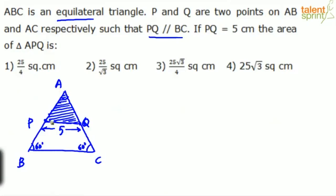More importantly, since PQ is parallel to BC we can say even APQ will become an equilateral triangle. So this will be 60 degrees. All the three angles will be 60 degrees here. Each of these angles would be 60 degrees: angle A, angle P and angle Q.